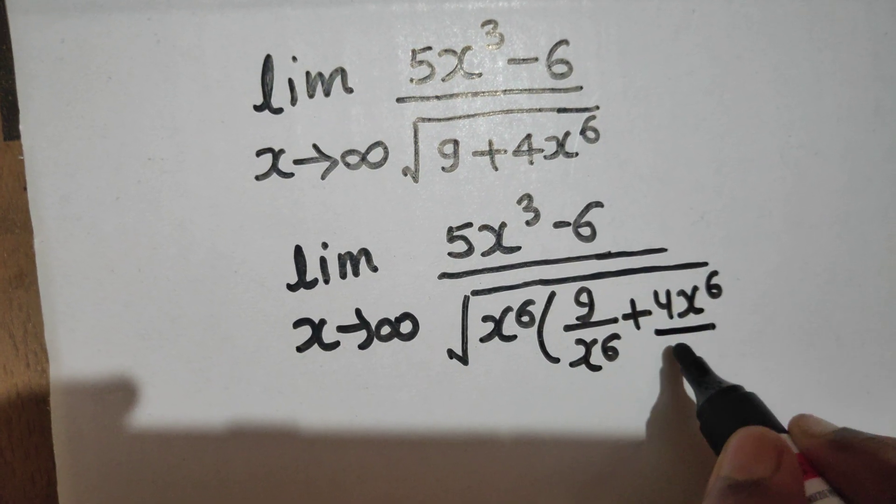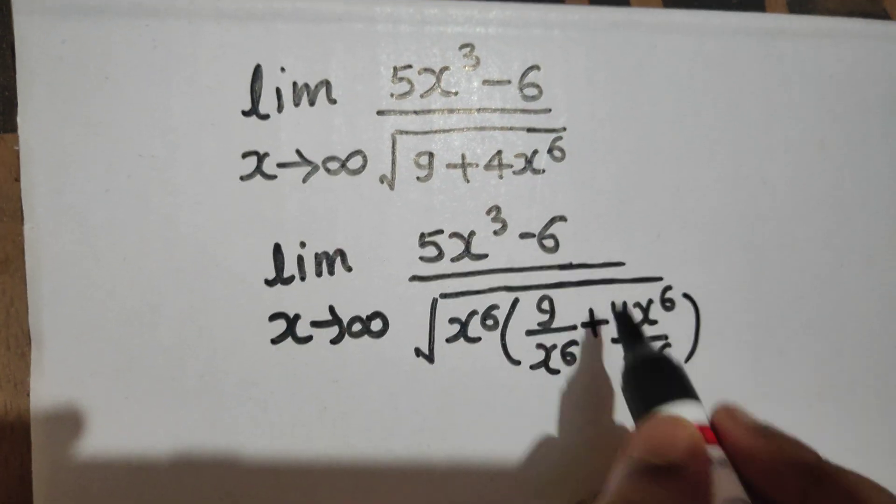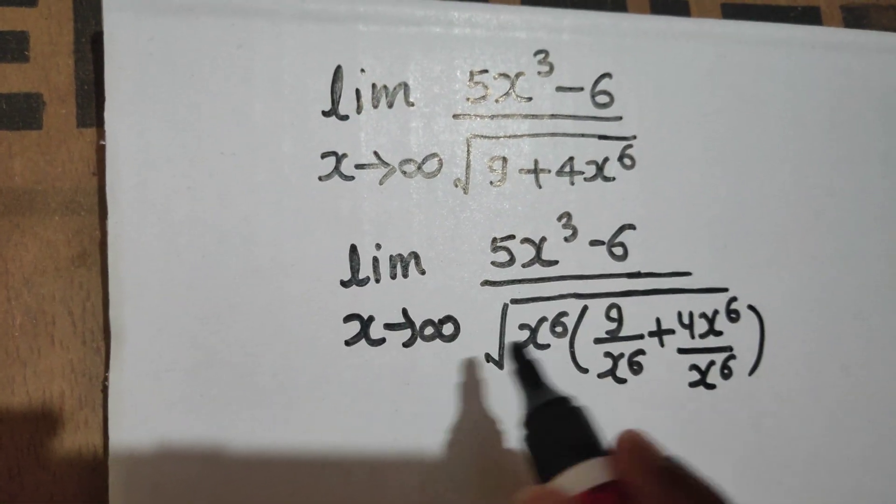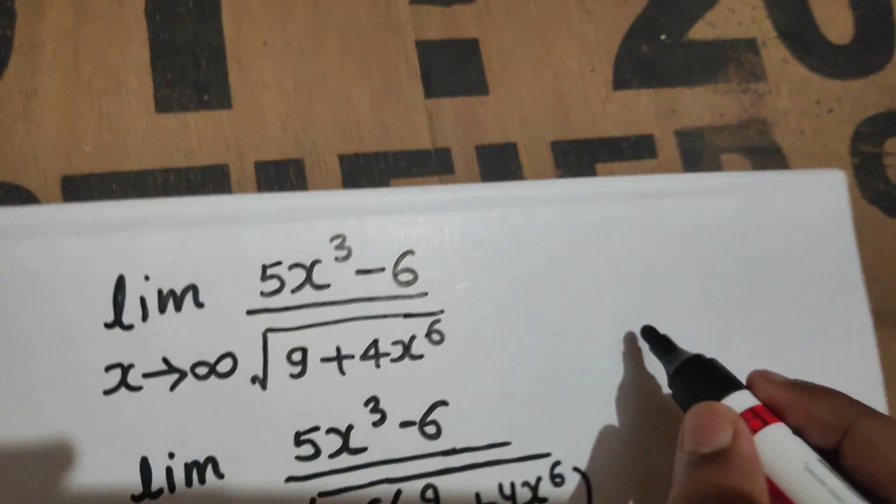Now I can take this x⁶ out. When x⁶ comes out, it will come with x⁶ times 1/2, that is x³ will come out. I hope you are clear with this idea of mathematics.